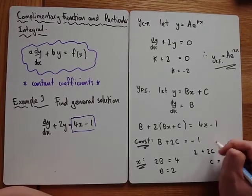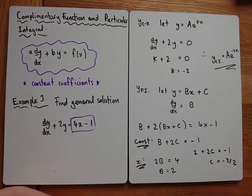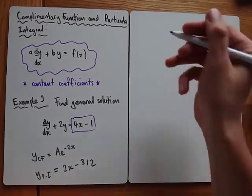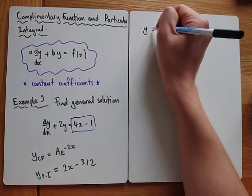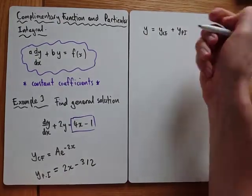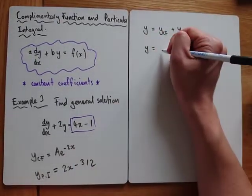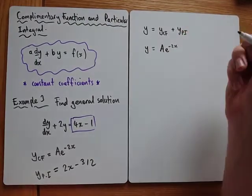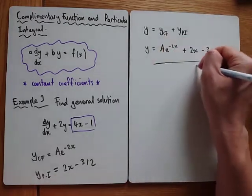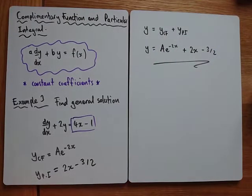We've got our complementary function, we've figured out our particular integral, so let's write the general solution. y equals y_CF plus y_PI, giving y equals A e to the minus 2x plus 2x minus three over two. There's one more example in this video where something slightly different happens, so it's definitely worth staying on for it.